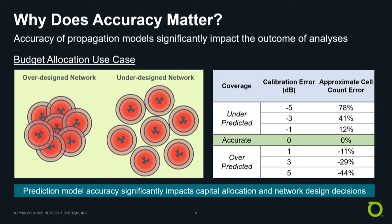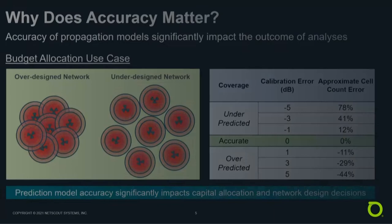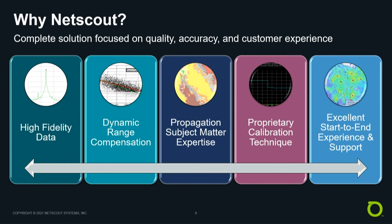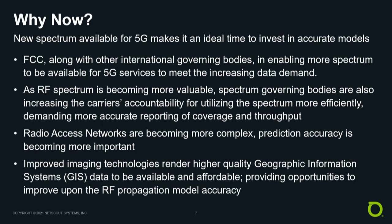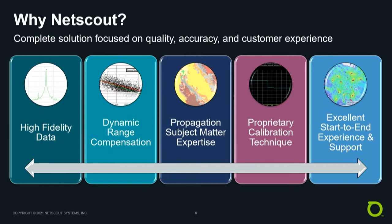That's where the importance of modeling comes in this type of decision-making. In the next section, I want to discuss why NetScout is best positioned to provide the most accurate models. First, we start out with high-quality data. Having collected more than 30,000 CW measurements over the past 20 years, we have established and perfected proprietary processes to collect the highest quality data that yields the highest quality models. We also have an off-the-shelf library of data available to our customers that may significantly improve cost and time to delivery for our projects.